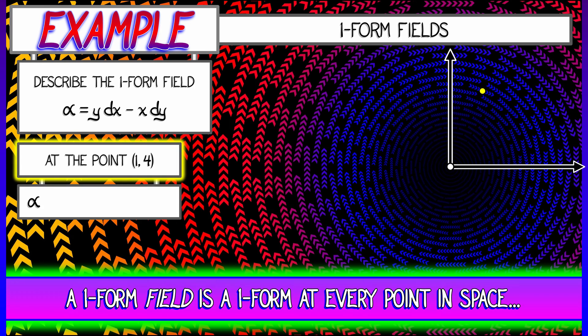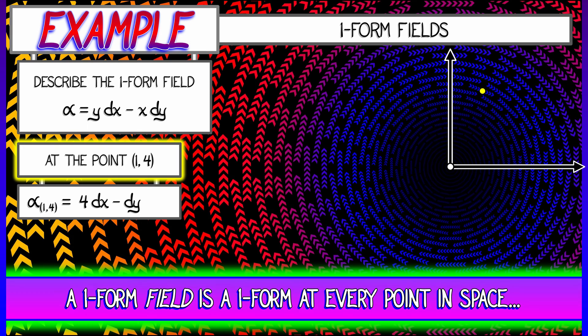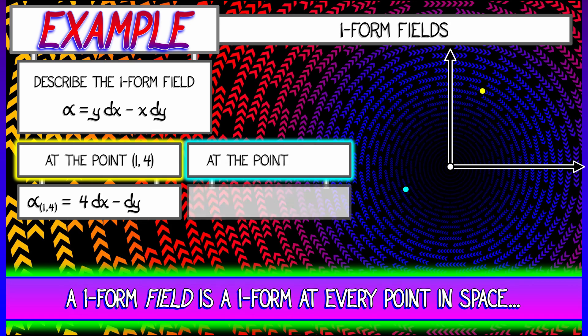But let's think about this more specifically. If I pick a point, let's say x equals 1, y equals 4, and evaluate the one-form field at that point, then I get 4dx - 1dy. I get a particular linear one-form there.